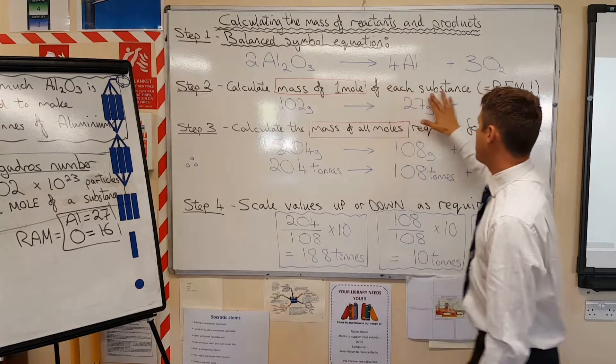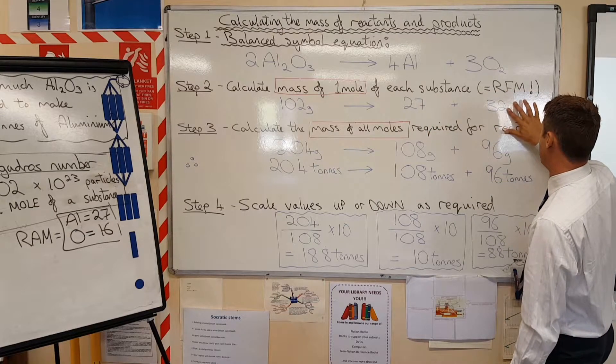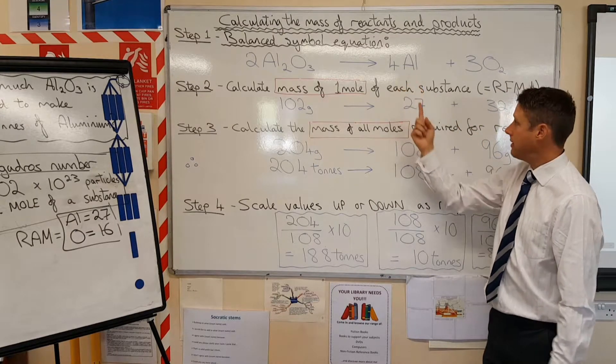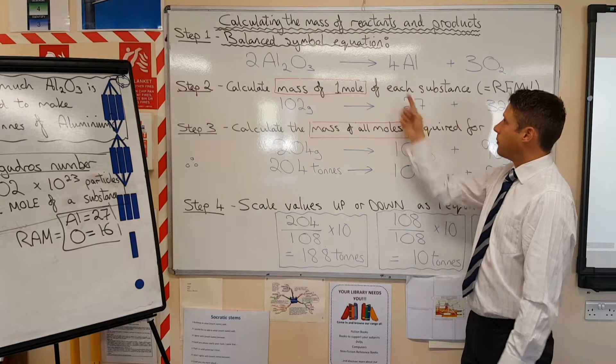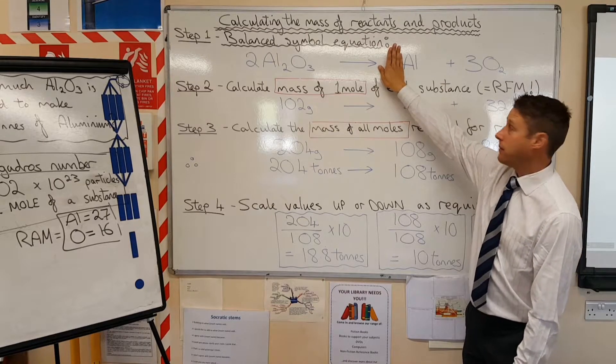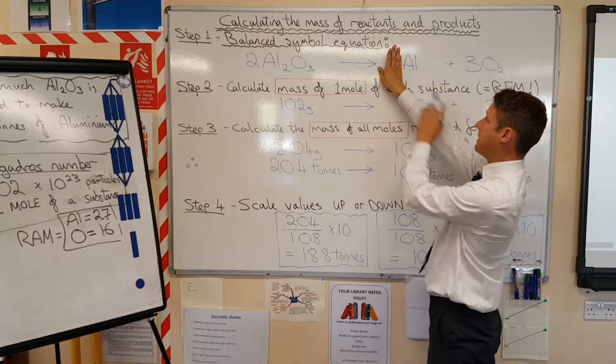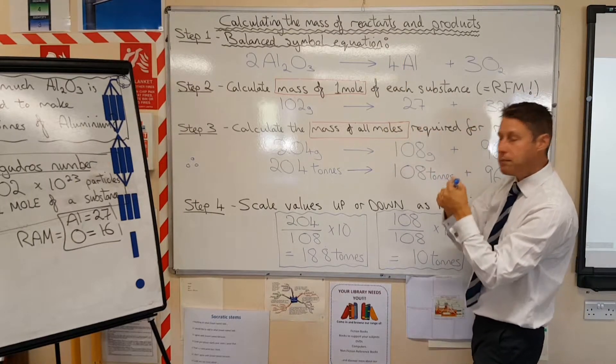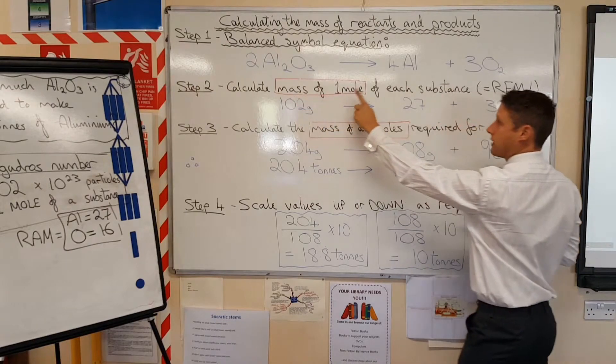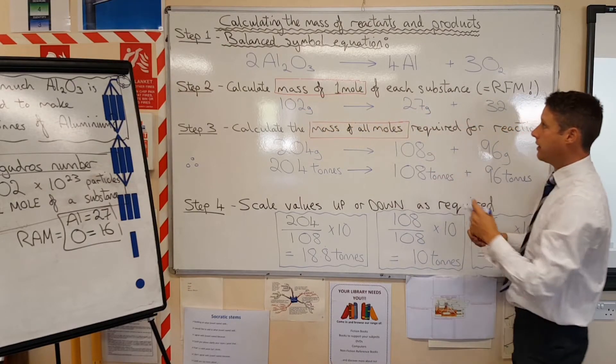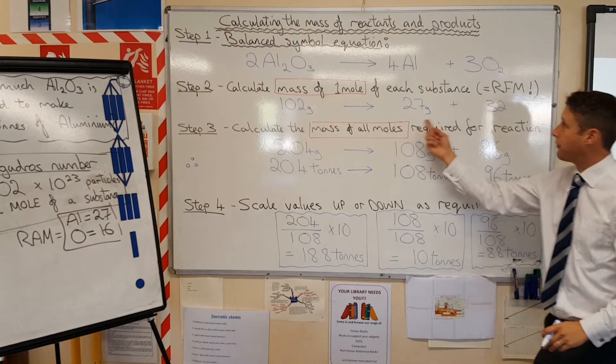So let's do the same with the next part of the equation. So we've got our aluminum over here. We're ignoring the four at the beginning, to start with, because we're not going to just look at the chemical itself. Aluminum, 27. If we want one mole of this, remember, we're step two calculating one mole to begin with. We want one mole, which is 27 grams.